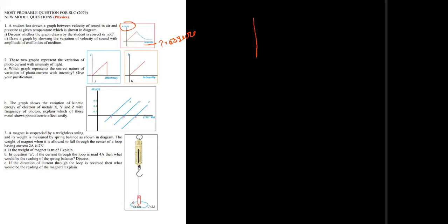First, part one: a student has drawn a graph between velocity of sound in air and pressure at a given temperature, which is shown in the diagram. On the y-axis we have velocity and on the x-axis it is pressure. The question asks: discuss whether the graph drawn by the student is correct or not.